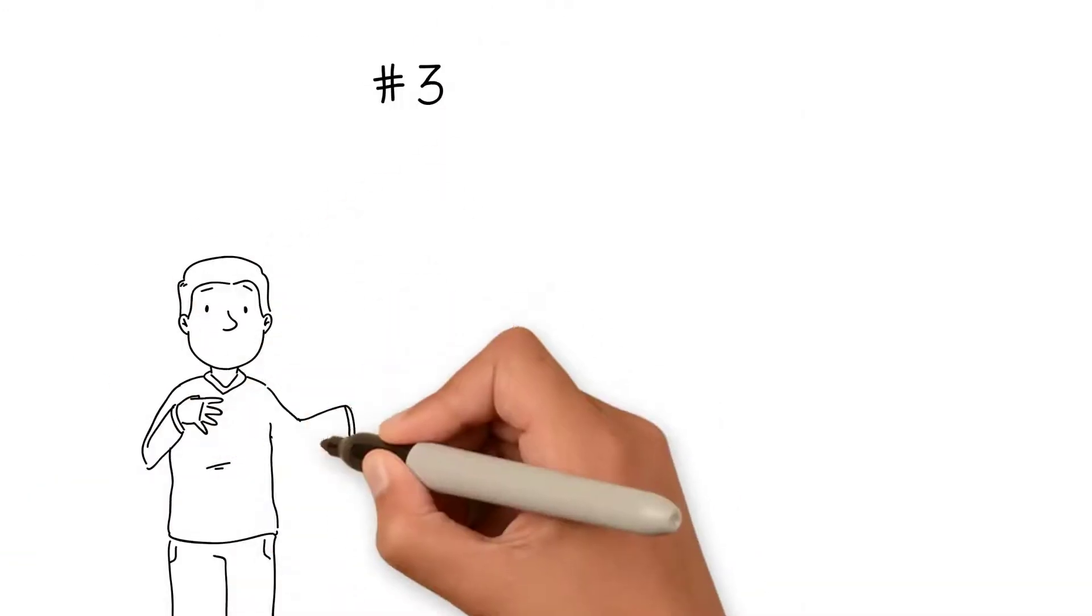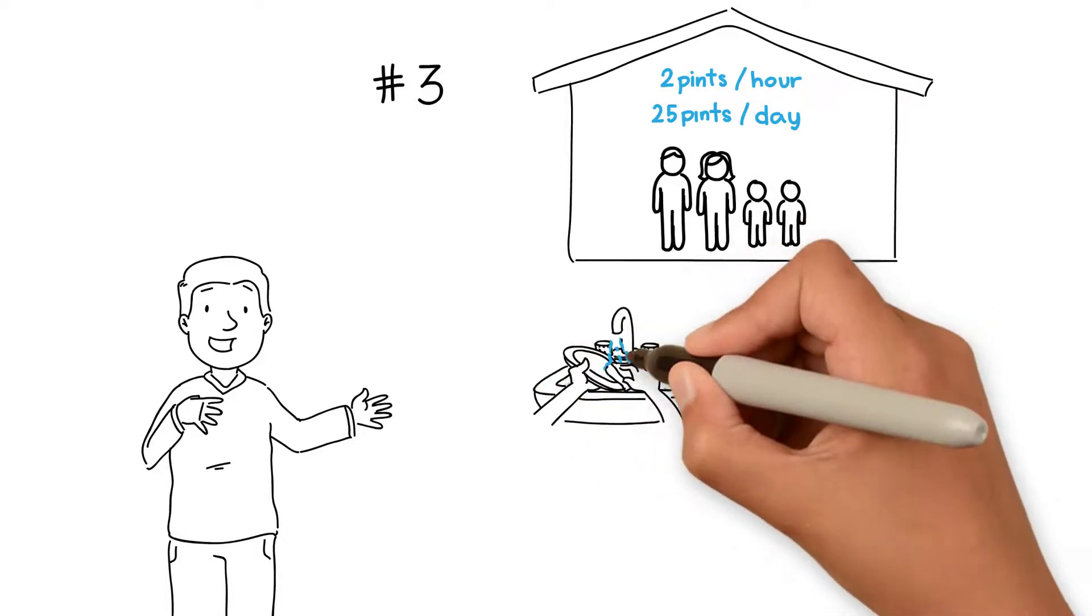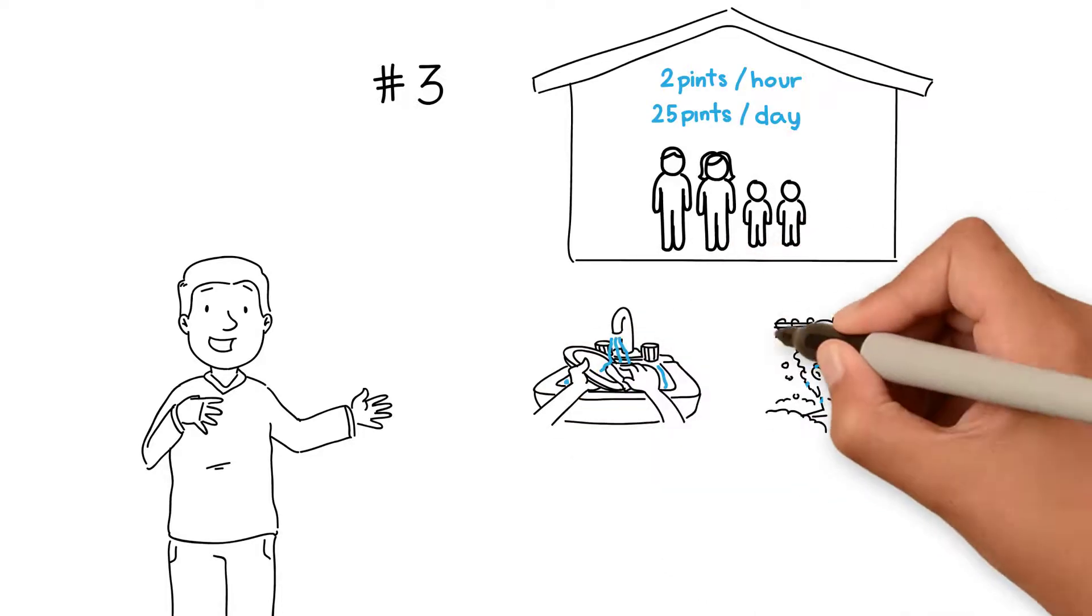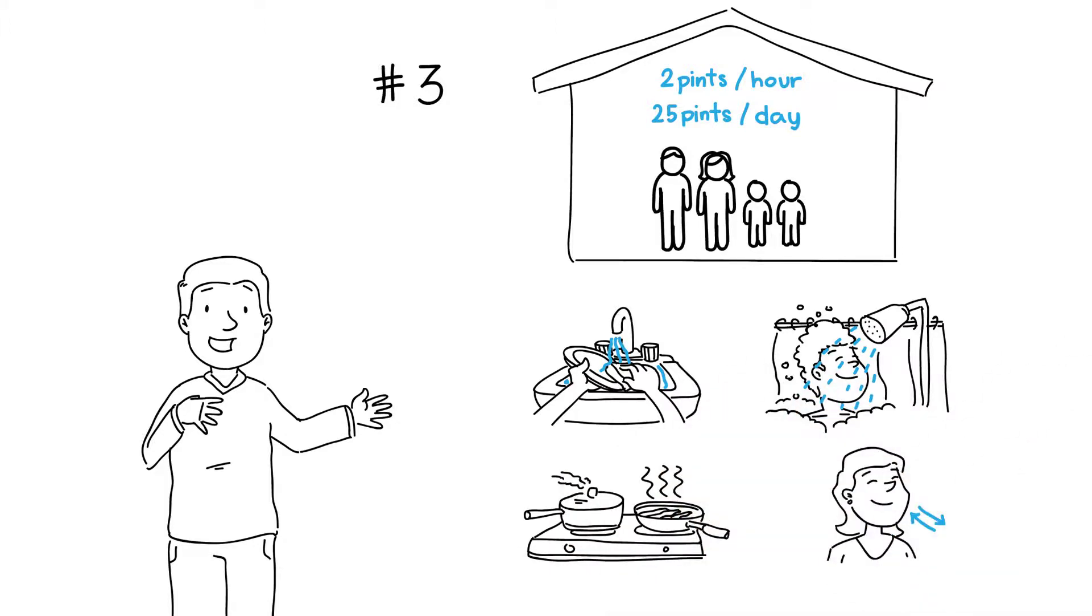Number three is internally generated moisture. A family of four produces on average two pints of water an hour, or up to 25 pints of water a day, simply by washing dishes, taking showers, cooking, and breathing.